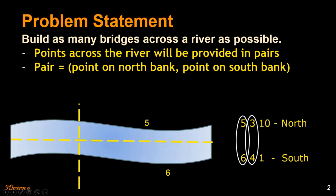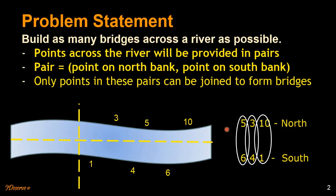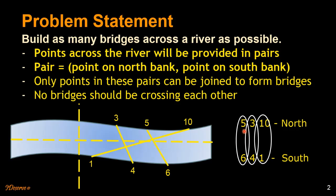So 3 is at this point, 4 is here, and then we have 1 and 10. The condition is we can only form bridges between these pairs — so 5 and 6 can form a bridge, but 5 and 4 cannot form a bridge. That is the first condition we have in this problem. There is one more condition: bridges cannot cross each other.